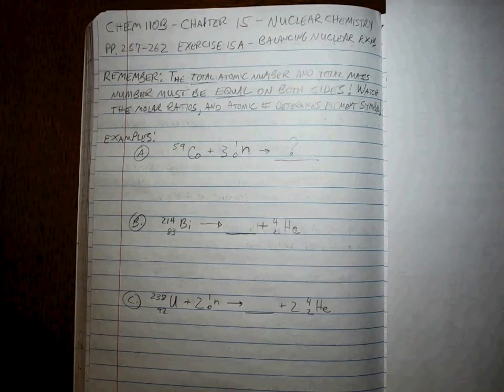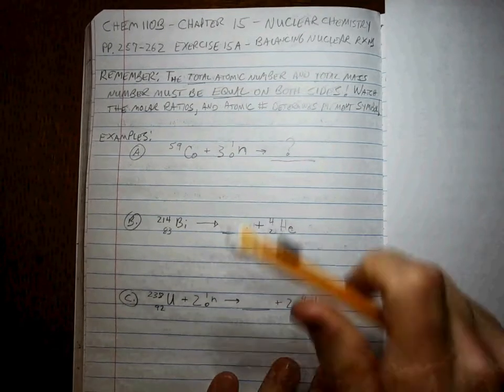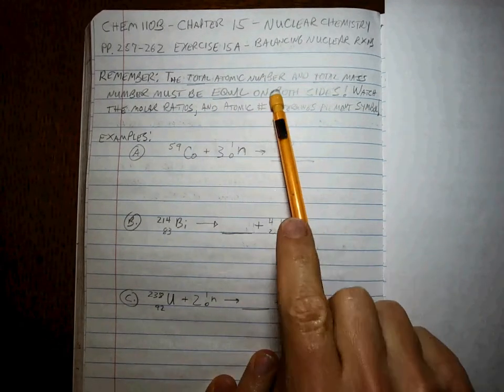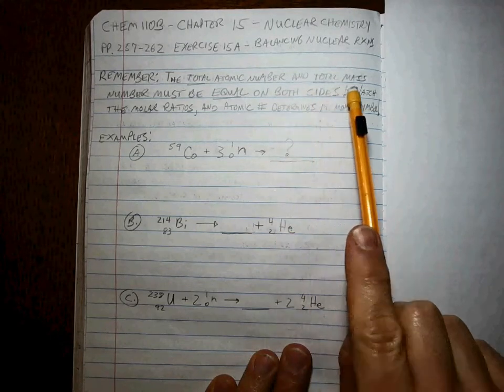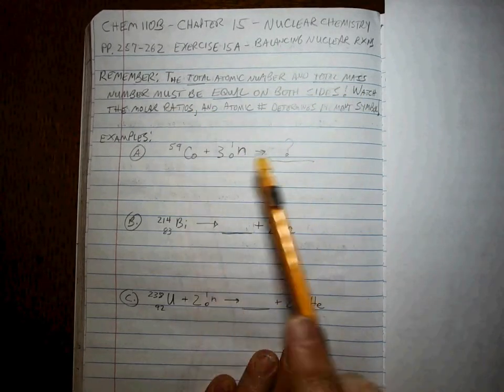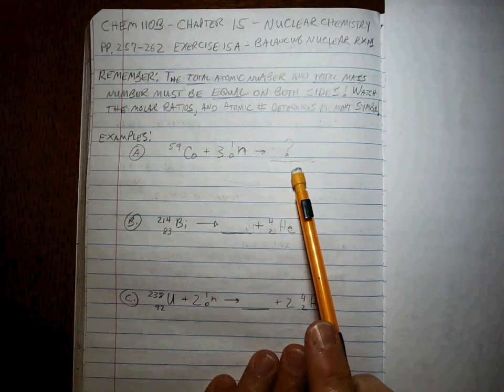Alright guys, Chapter 15, Nuclear Chemistry. The first thing we have to do, as always, is make sure we have a balanced reaction. Remember, the total of all the atomic numbers and the total of all the mass numbers must be the same thing on both sides of the equality.